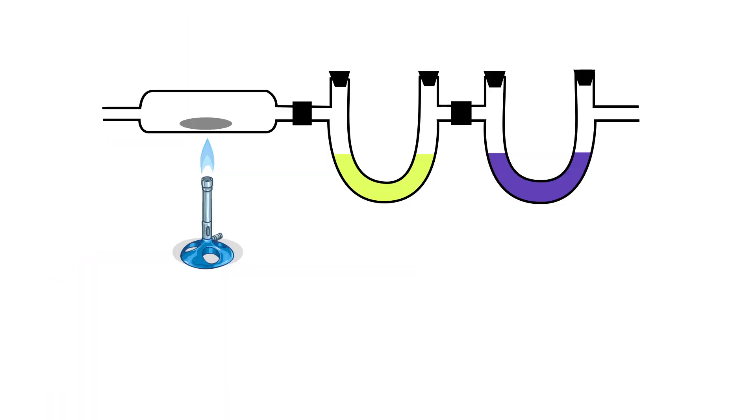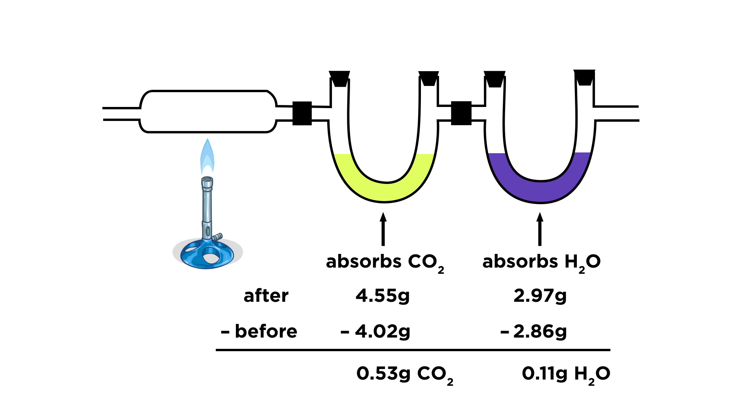We developed this nifty apparatus whereby a sample of hydrocarbon with known mass is placed here over the flame. The tube is open to allow oxygen to enter, and then the vaporized products travel this way through these materials. One material absorbs water, the other absorbs carbon dioxide. We weigh these materials before and after the experiment, and the difference will be the mass of water and carbon dioxide absorbed respectively.